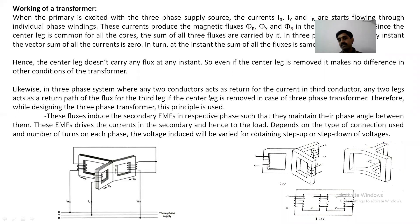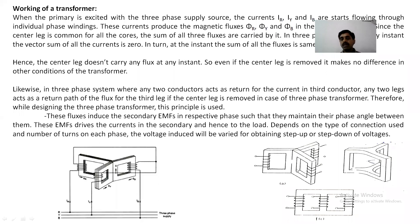Just as in a three-phase system any two conductors act as a return for the current in the third, any two legs act as a return path for the flux of the third leg. Therefore, when the central leg is removed during design, the three fluxes induce secondary EMFs in the respective phases such that they maintain a 120-degree phase angle with each other. These EMFs drive the current in the secondary winding. The voltage induced on each phase will vary based on the number of secondary turns, which determines whether it is a step-up or step-down transformer. We will continue our discussion with different types of three-phase transformer connections.